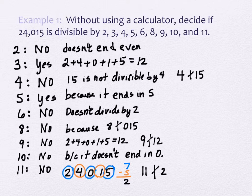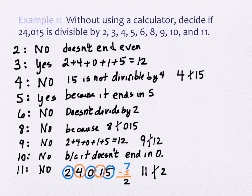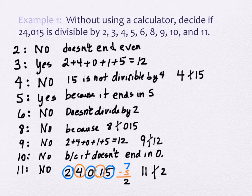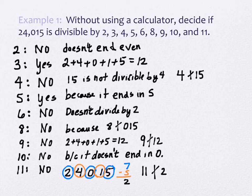Any questions on those? One comment: your homework rarely asks you to justify your answer, but on the test you will need to justify. Practice saying why — for example, 'five does not divide this number because it doesn't end in zero or five.' Simply saying 'no, because it doesn't work' is not sufficient. The point is to apply these shortcut rules, not just check with a calculator.